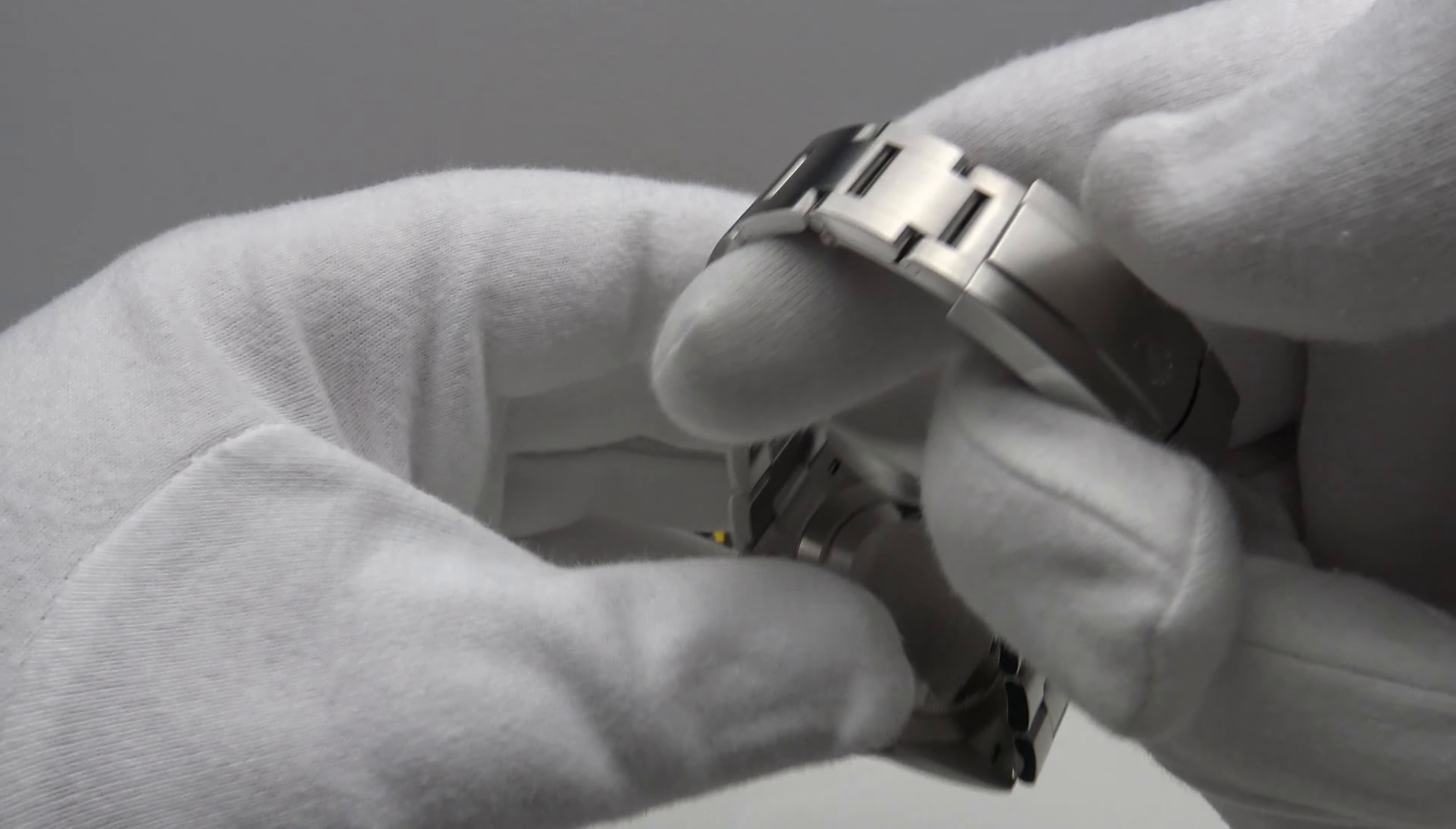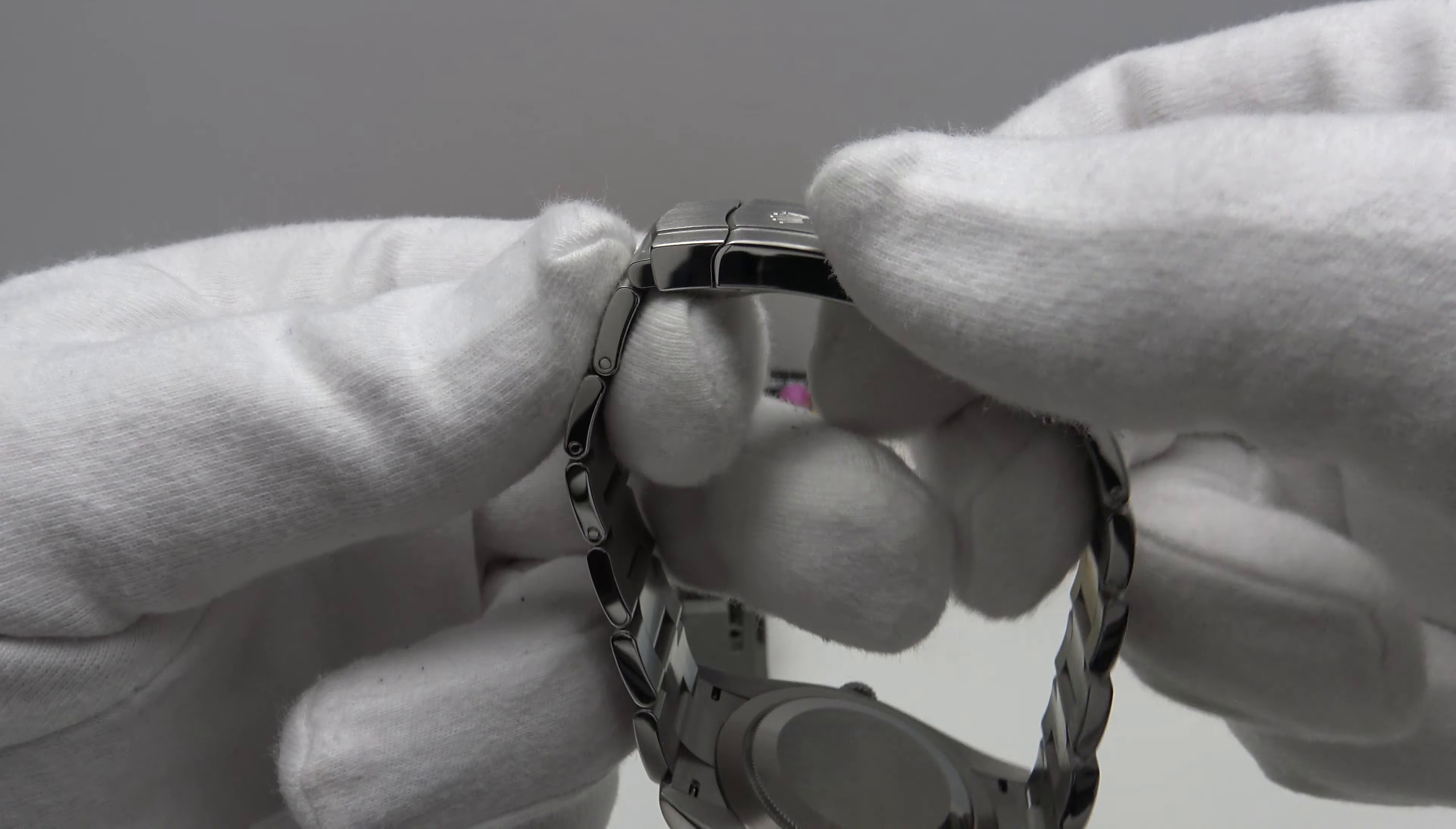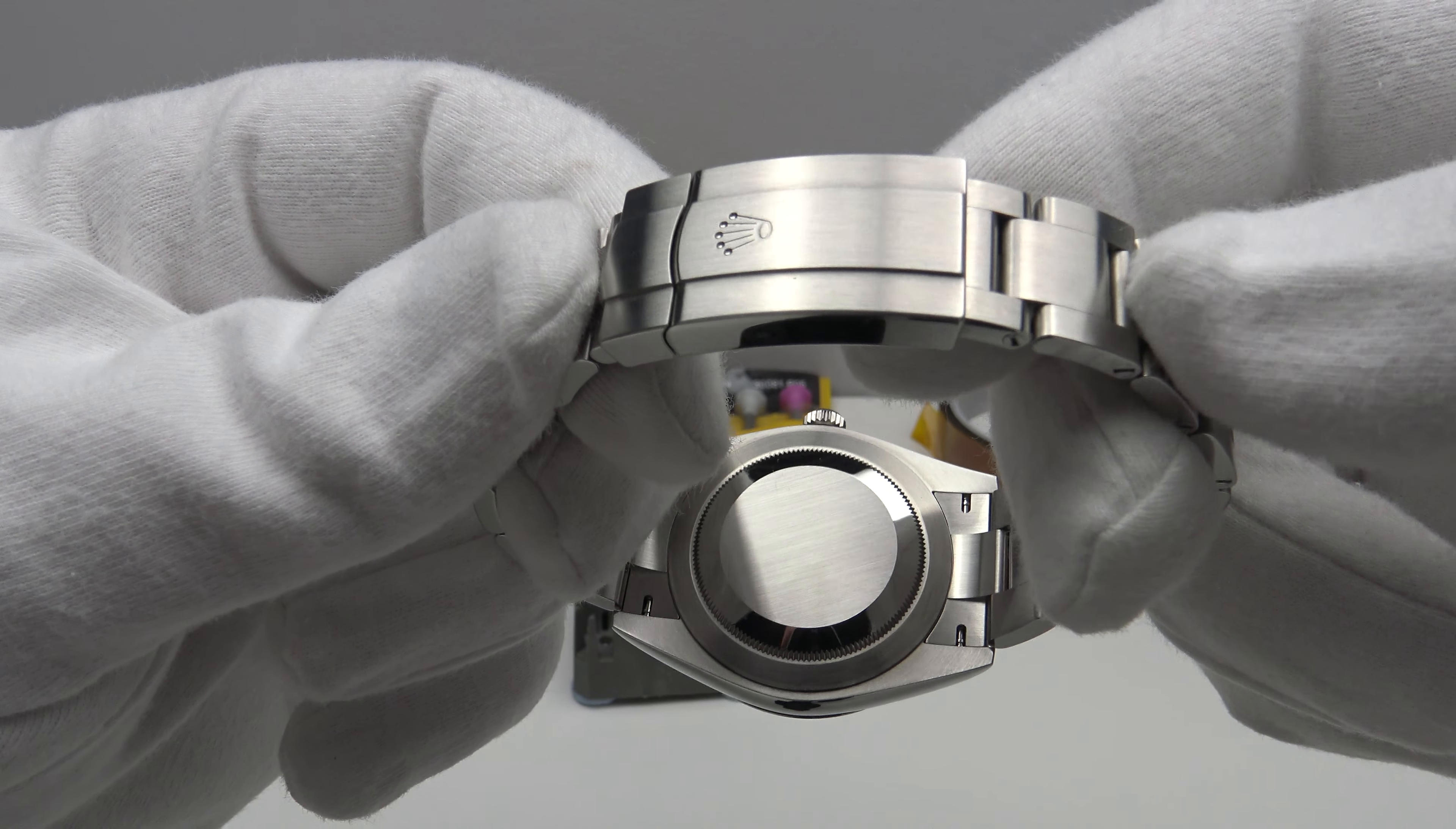Now, there's a reason why Rolex offset the clasp. You would think that they would have six links either side for symmetry so that the clasp would hang symmetrically underneath the head of the piece, but they don't actually do that. They put five links on one side and seven on the other side.